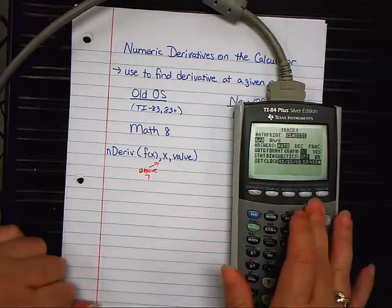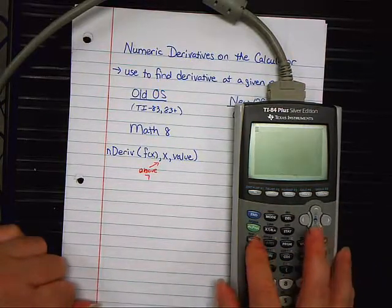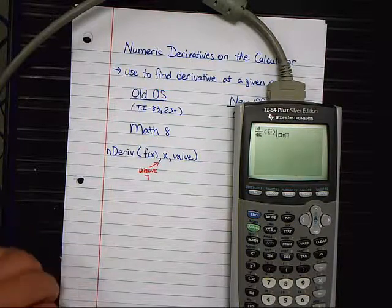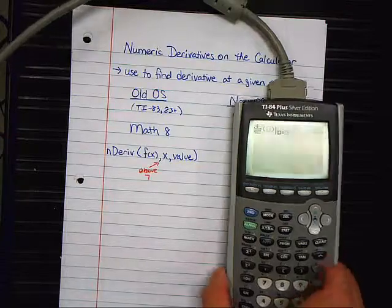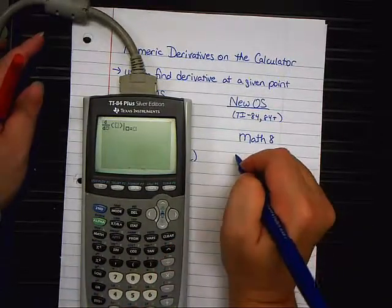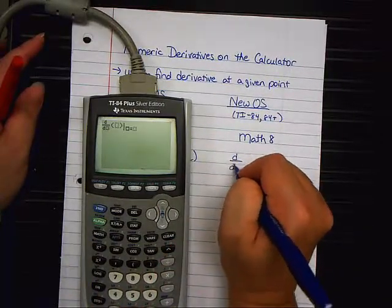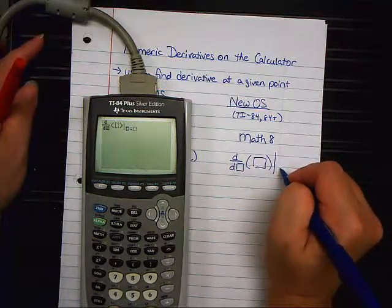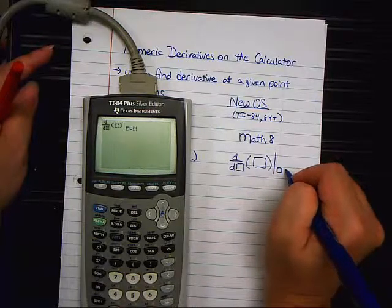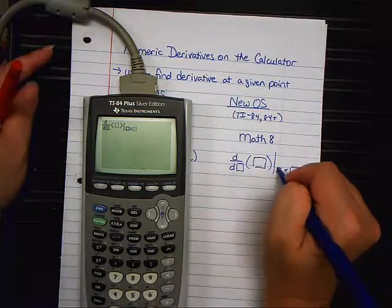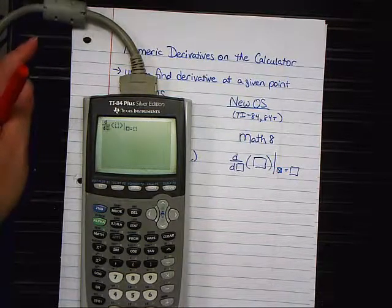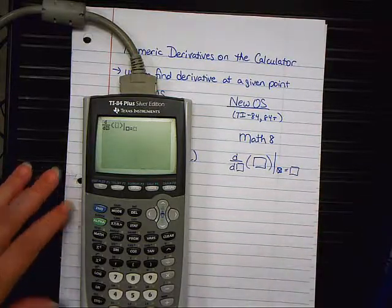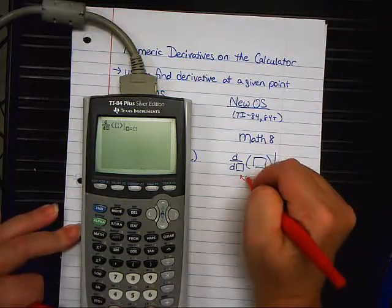Now, if you happen to have the new calculator and you type math 8, this is what you see, isn't it? Those of you with 84s, is this what you see? So, I'm going to move this over and write this down over here. It's a D over D square, parentheses, square, parentheses, line. And then it has a square here that you don't fill in and a square that you do here. That's going to turn into an X in a minute.